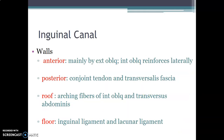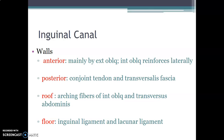The inguinal canal has four walls, each formed by two structures. Anteriorly: the external oblique aponeurosis, reinforced laterally by the internal oblique. Posteriorly: the conjoined tendon (formed by internal oblique and transverse abdominis) and the fascia transversalis. The roof is formed by the arcing fibers of the internal oblique and transverse abdominis muscles. The floor is formed by the inguinal ligament, reinforced medially by the lacunar ligament.